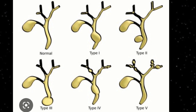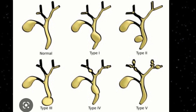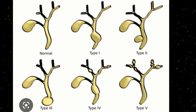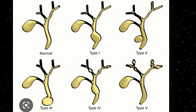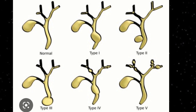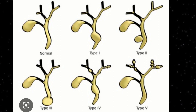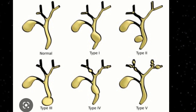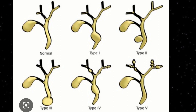A common pathology of the CBD is choledochal cyst. It is a congenital disorder and appears as focal or diffuse cystic dilatation of the biliary tree. It has 5 types and can be appreciated on the images. Type 1 is a fusiform dilatation of the CBD. Type 2 is a diverticulum of the bile duct and is a very rare entity. In Type 3, the cysts are confined to the intraduodenal portion of the CBD and cannot be appreciated on ultrasound images.